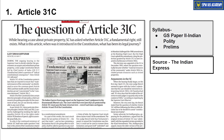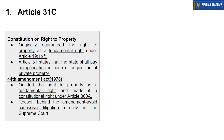The first article is about Article 31C. This topic is important from our syllabus GS Paper 2, Indian polity point of view. To understand Article 31C, we first need to look at the constitutional provisions regarding right to property. Originally, right to property was protected under Article 19(1)(f) as a fundamental right. Article 31 further stated that the state shall pay compensation in case of acquisition of private property.